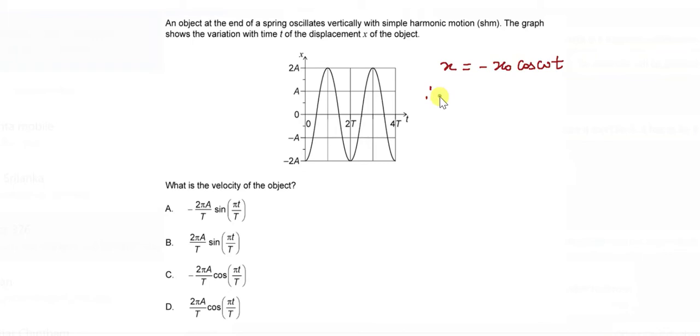Therefore what will be the velocity? We know that if the displacement is given as x equals negative x naught cos omega t, then velocity is given as V is negative omega x naught into negative sine omega t. And that gives me a positive value of the velocity which is omega x naught sine omega t.